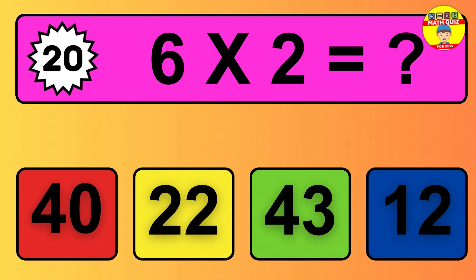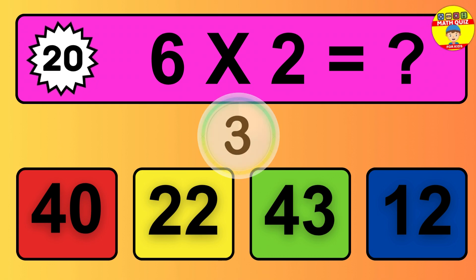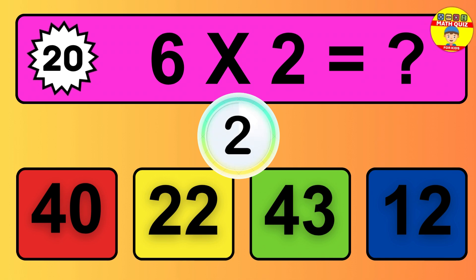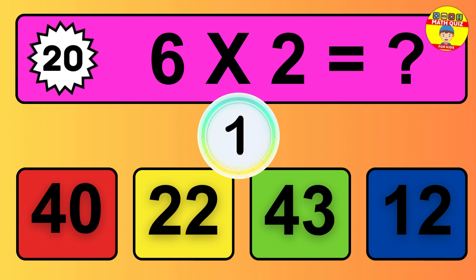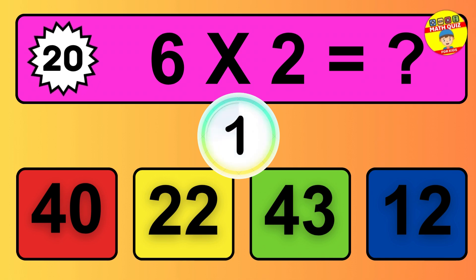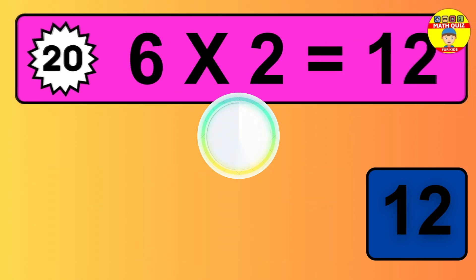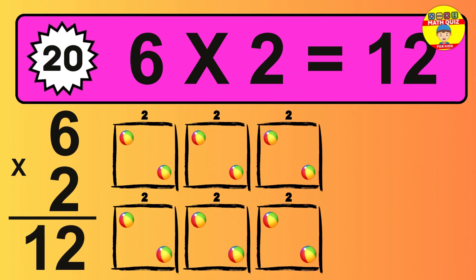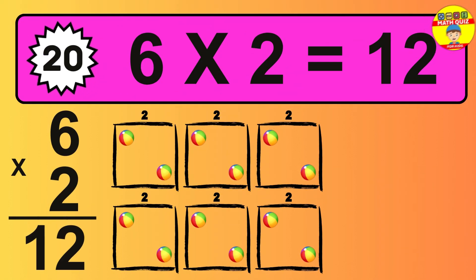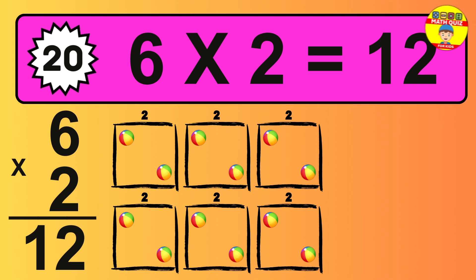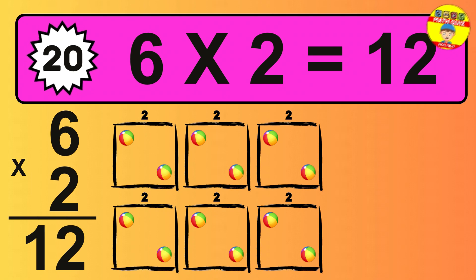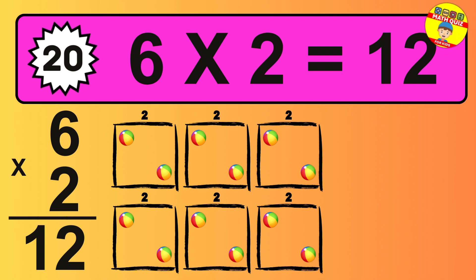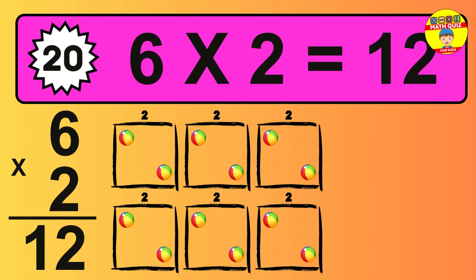Question 20. 6 times 2 equals what? The answer is 6 times 2 is 12. To calculate, we have 6 groups with 2 balls each one. So how many balls do we have? 12 balls.